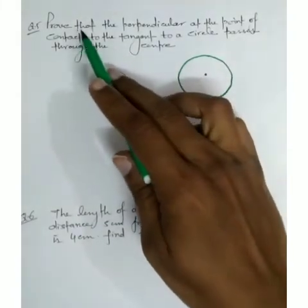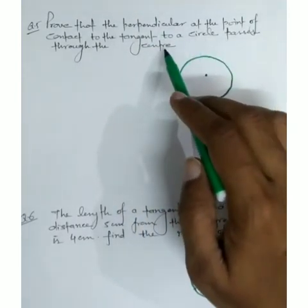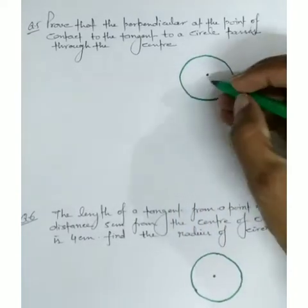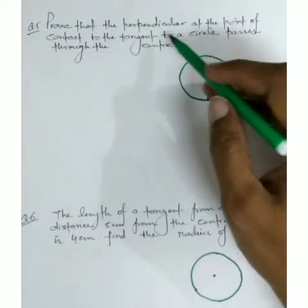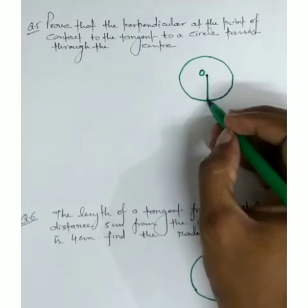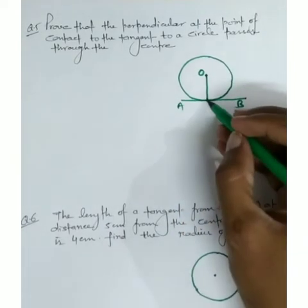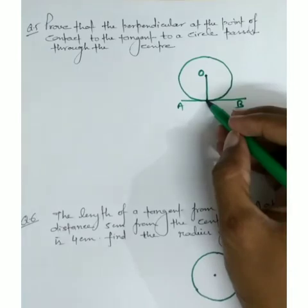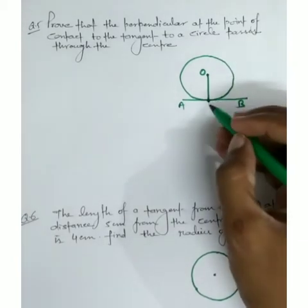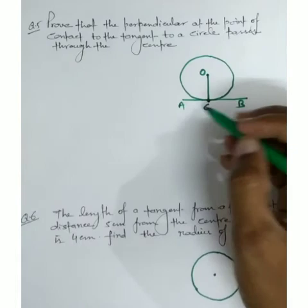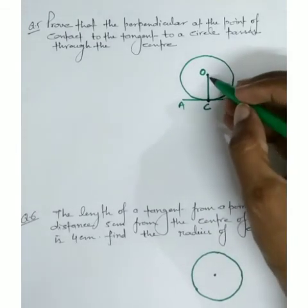Question number five: prove that the perpendicular at the point of contact to the tangent to a circle passes through the center. Suppose this is the center O of the circle. The tangent is AB, and where the radius and tangent meet is called the point of contact. You have to prove that perpendicular OC at tangent AB passes through center O.